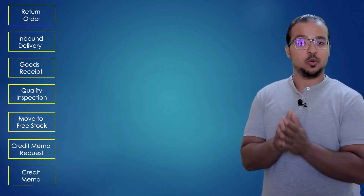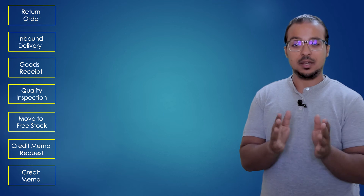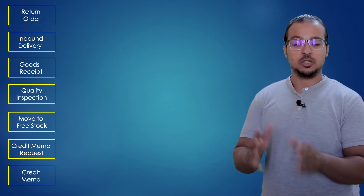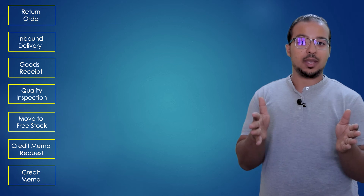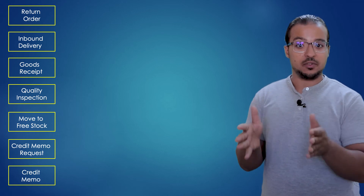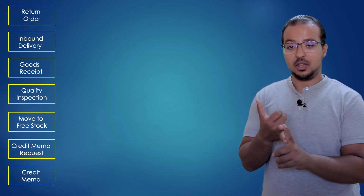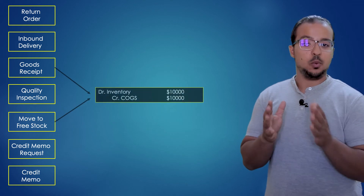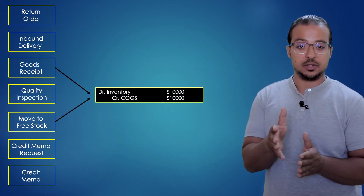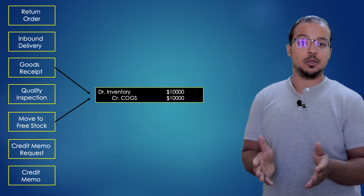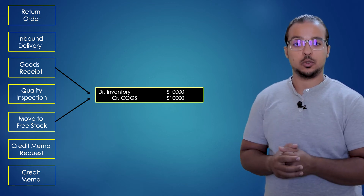Once the quality team confirms that the products are okay, the sales team can create a credit memo request, which is then converted into a credit memo. Now let's look at the accounting entries at every step. When we create the returns order and the inbound delivery, we don't have any financial entries. The first financial entry in the process is for the goods receipt: a debit to the inventory account and a credit to cost of goods sold.